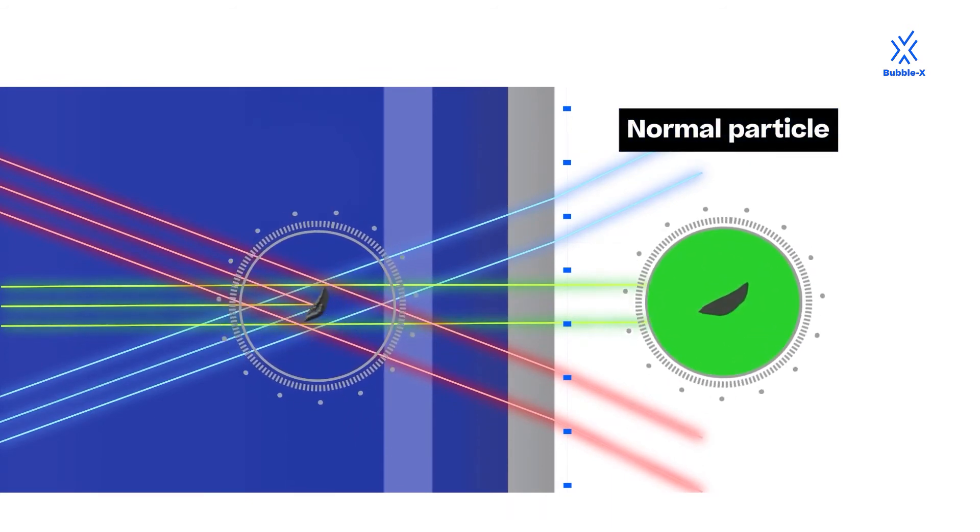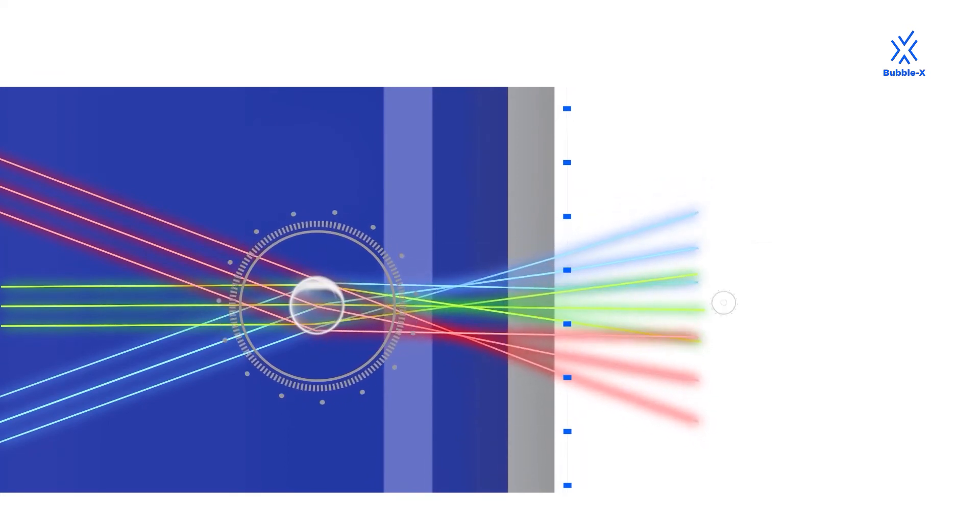A normal particle obscures the light. A transparent particle redirects the light.